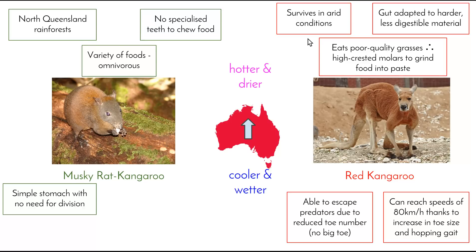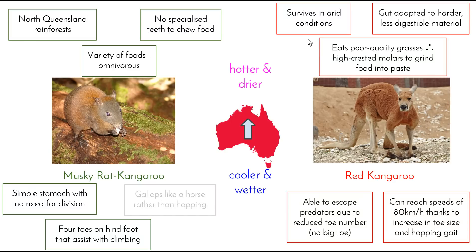By contrast, the musky rat kangaroo is the only kangaroo that still has four toes on its hind foot, which helps it climb on fallen branches and trees. When hopping at speed, the musky rat kangaroo actually gallops like a horse — it is the only kangaroo which does not hop. All of these adaptations have assisted the red kangaroo to adapt to its new environment: surviving in arid conditions, digesting food with low nutritional value, and escaping predators now that much of the tree cover has disappeared.